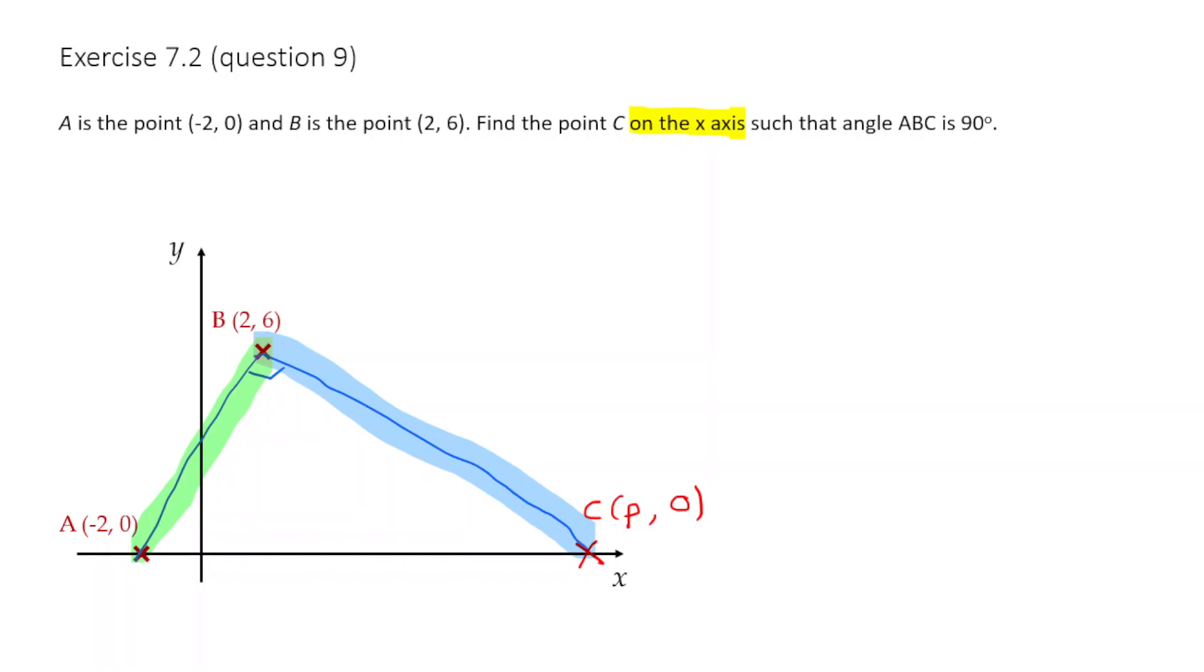So if we calculate those two gradients, we know the relationship between them. Because any two gradients which are perpendicular, if I multiply them together, I should get negative one. Remember that rule, that M1 times by M2 is equal to negative one if those two gradients are perpendicular.